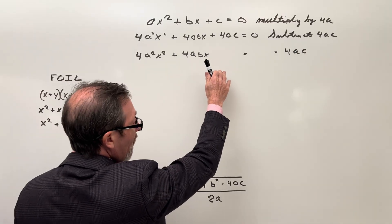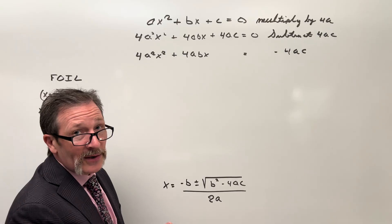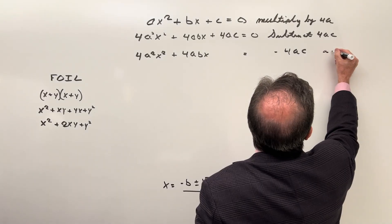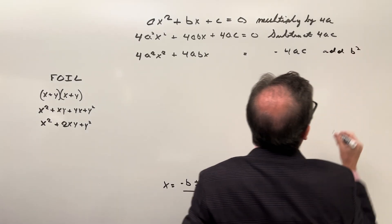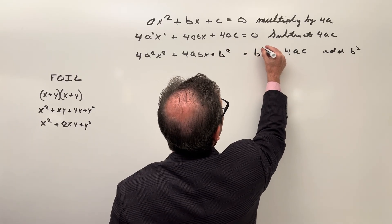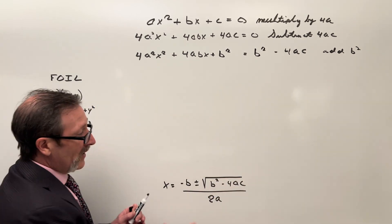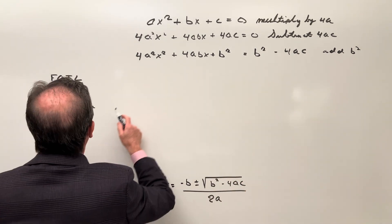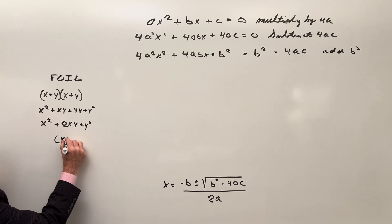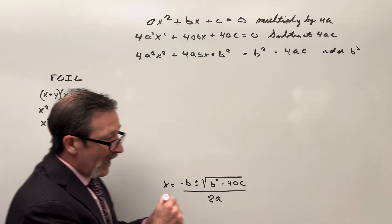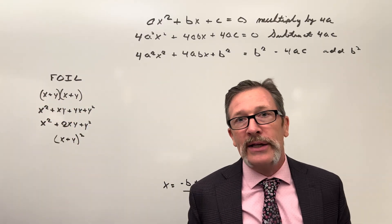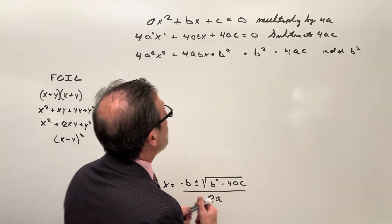They might say: 'I'm going to add b² to both sides.' So we add b² to the left side, and whatever I do to one side I do to the other. Now they can start to think — remember that FOIL stuff? Couldn't this really be written as (x + y)²? Many of them will think, 'We've done this before — I just never thought I'd use it again.'